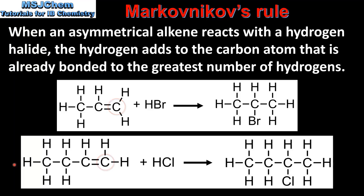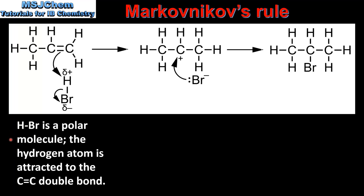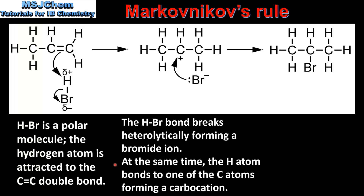Next we look at the explanation, starting with the reaction between propene and hydrogen bromide in more detail. Hydrogen bromide is a polar molecule. The hydrogen atom, because it has a positive dipole, is attracted to the carbon-to-carbon double bond. Here we can see the hydrogen bromide molecule with a positive dipole on the hydrogen and the negative dipole on the bromine. Next, the hydrogen-to-bromine bond breaks heterolytically, forming a bromide ion. At the same time, the hydrogen atom bonds to one of the carbon atoms, forming a carbocation. Here we can see that the hydrogen atom has bonded to the carbon atom that is already bonded to the greatest number of hydrogens.